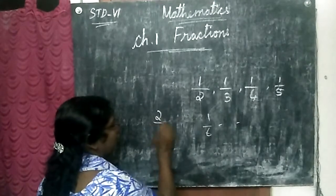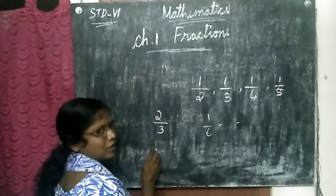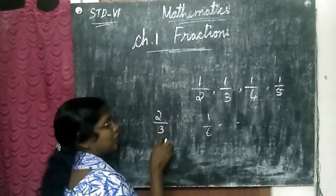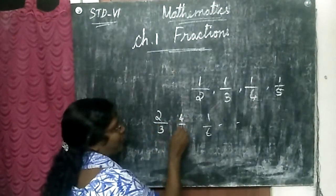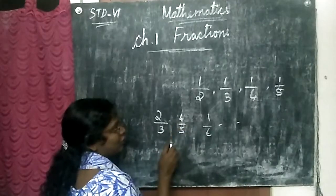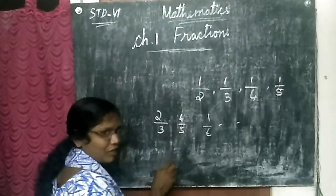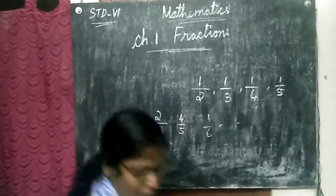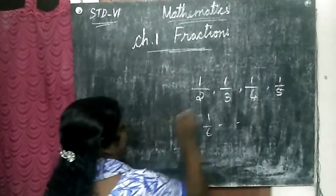Suppose two by three means how you will read this? Two third. Four by five means? Four fifth. Like this we have to read it.